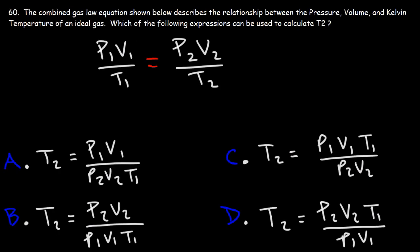The combined gas law equation shown below describes the relationship between the pressure, volume, and Kelvin temperature of an ideal gas. Which of the following expressions can be used to calculate T2?